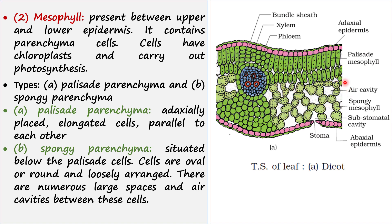The next layer is the mesophyll layer. The mesophyll layer is present between the upper and lower epidermis. It contains parenchyma cells, which contain chloroplasts, so they are green in color and they carry out photosynthesis.